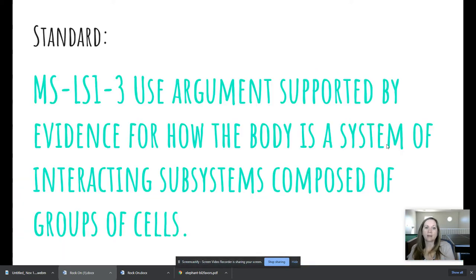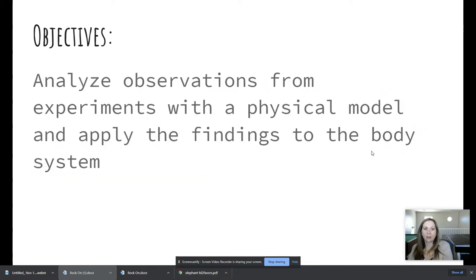We are working on the standard to use arguments supported by evidence for how the body is a system of interacting subsystems composed of groups of cells. Today we're going to analyze observations from experiments with a physical model and apply the findings to the body system.